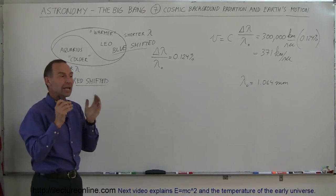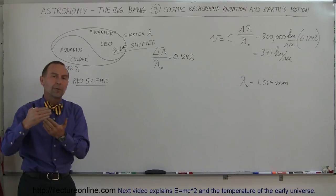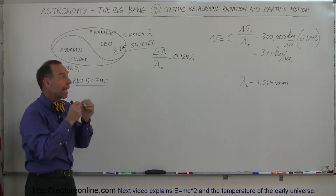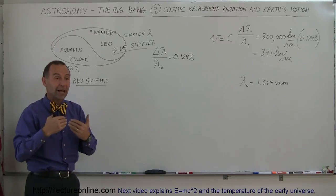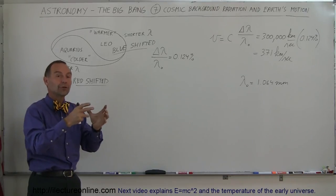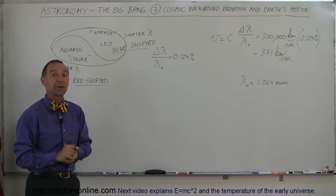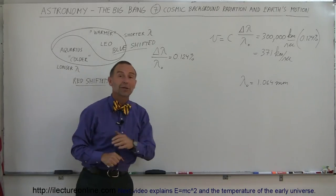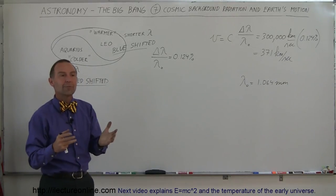So the radiation in the universe, the cosmic background radiation of the universe, is so uniform that we're actually able to figure out and calculate the speed of the earth through the universe relative to cosmic background radiation, and that speed happens to be 371 kilometers per second. Absolutely amazing.